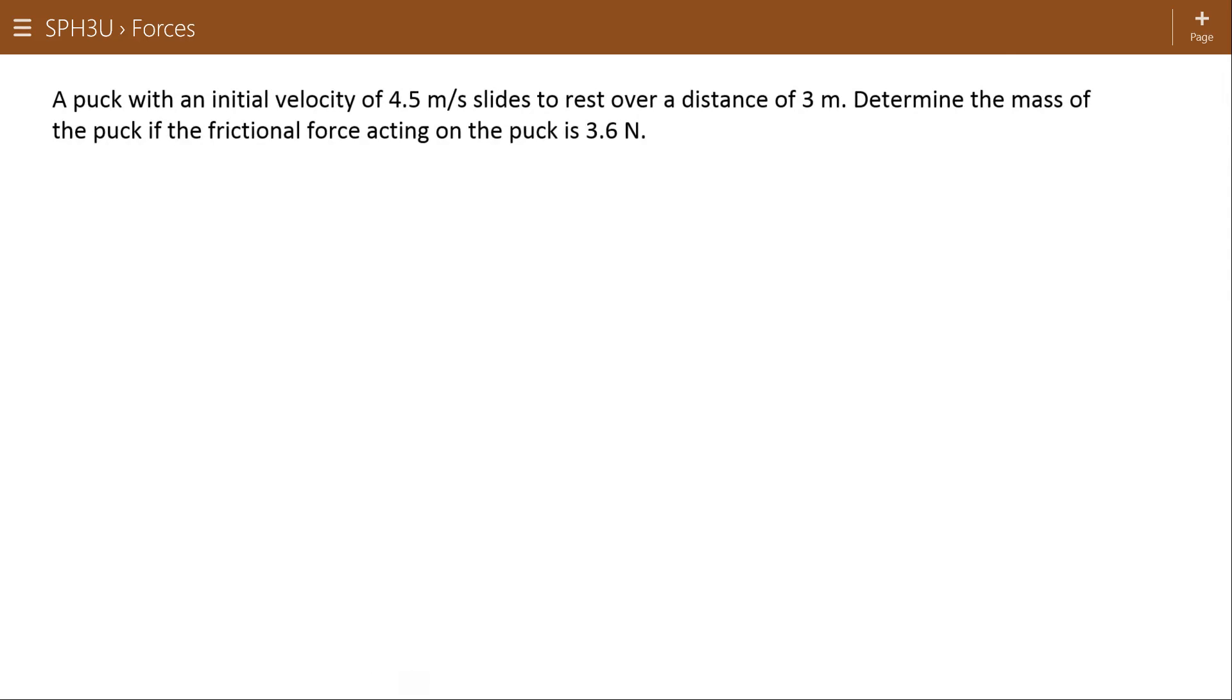Puck with an initial velocity of 4.5 meters per second slides to rest over a distance of 3 meters. Determine the mass of the puck if the frictional force acting on the puck is 3.6 Newtons. So we have a 3.6 Newton frictional force. We're going to assume that there's force gravity and a normal force acting on this puck. But they're equal in magnitude and opposite in direction so they cancel each other out.